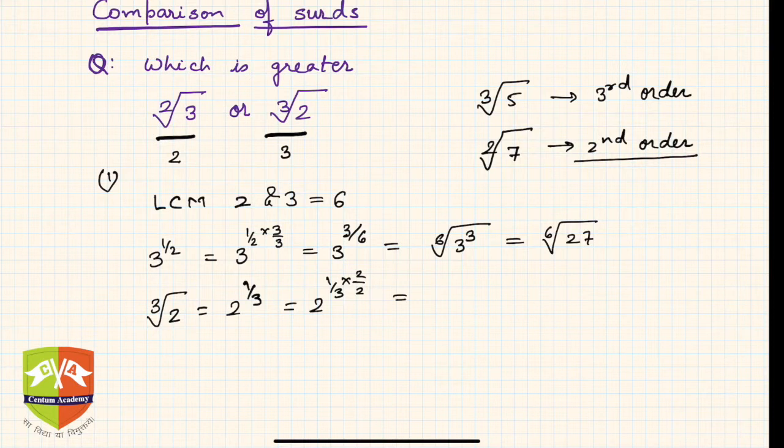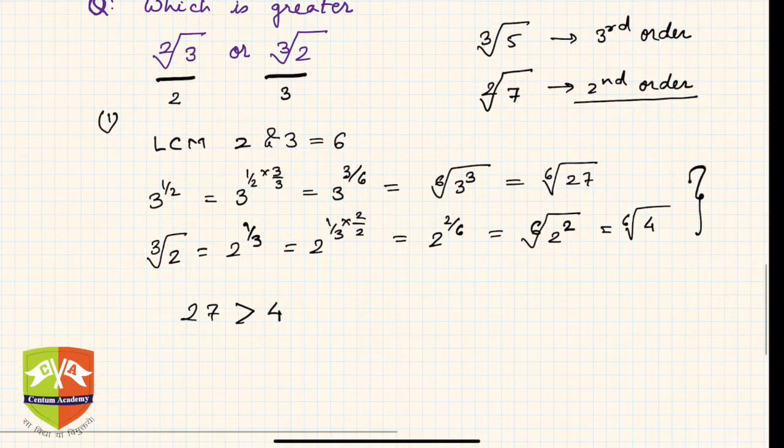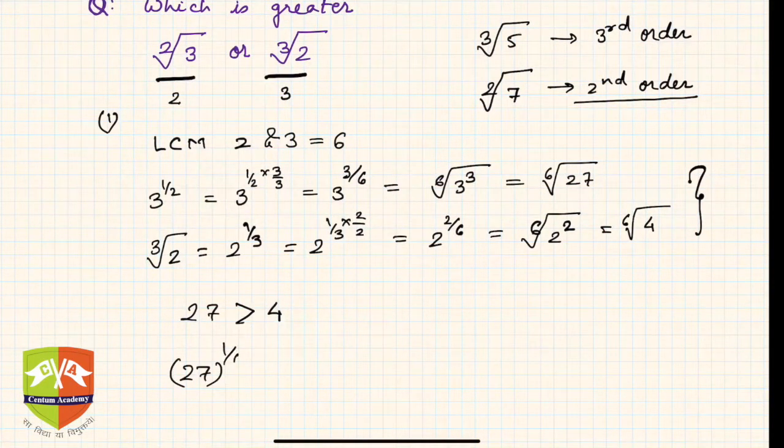Now both orders are the same. Once the orders are same, you can compare just as you compare any two numbers. Clearly, 27 is greater than 4. If I raise both to the power 1/6, remember when you raise two numbers to a positive power, the inequality doesn't change.